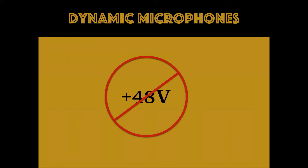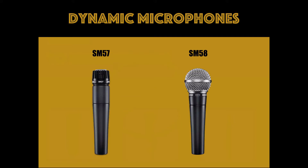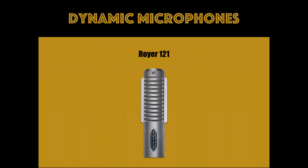There are two types of dynamic microphones. Moving coil is the first type and what I personally see as the stereotypical dynamic microphone. The SM57 and SM58 are examples of popular moving coil microphones, but did you know that ribbon microphones such as the Royer R121 are also dynamic microphones? Let's take a look at the anatomy to further understand why.